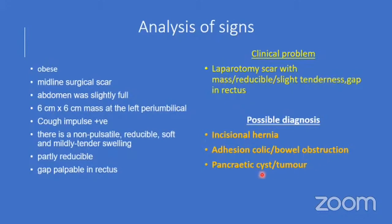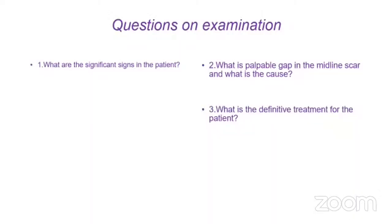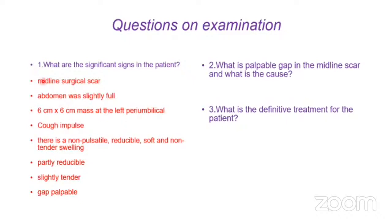However, pancreatic cyst or tumor cannot yet be ruled out. After the examination, the significant signs are: abdominal scar, abdomen slightly full, mass at left periumbilical area, positive cough impulse, partly reducible and slightly tender, and a gap felt in the rectus sheath.